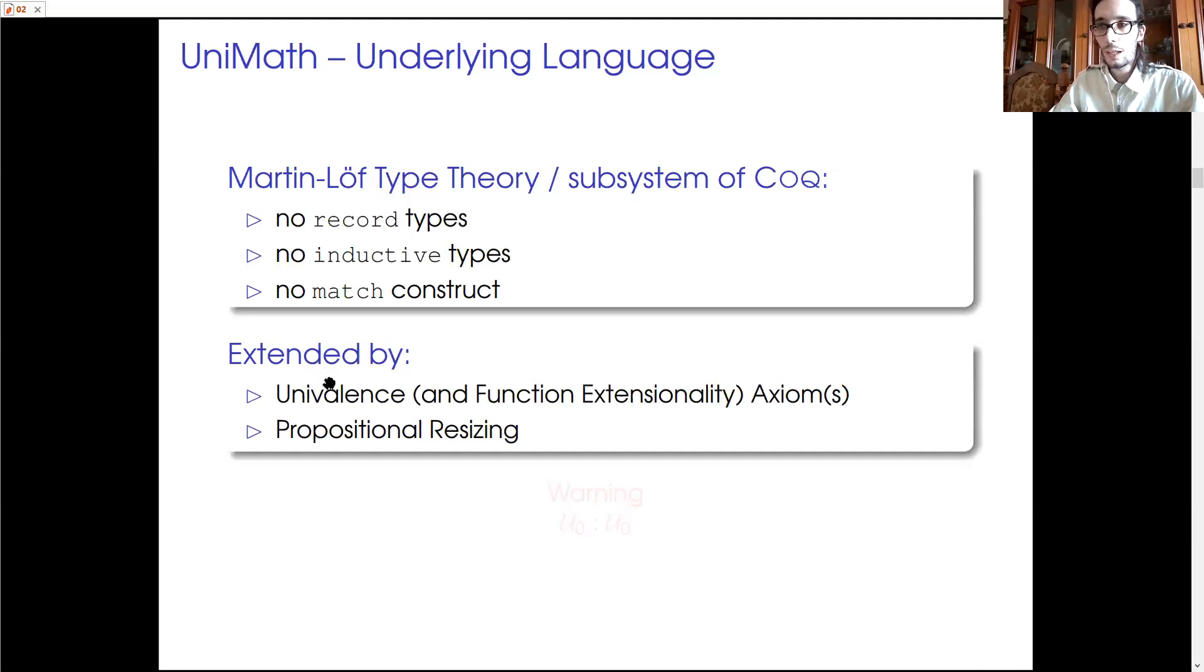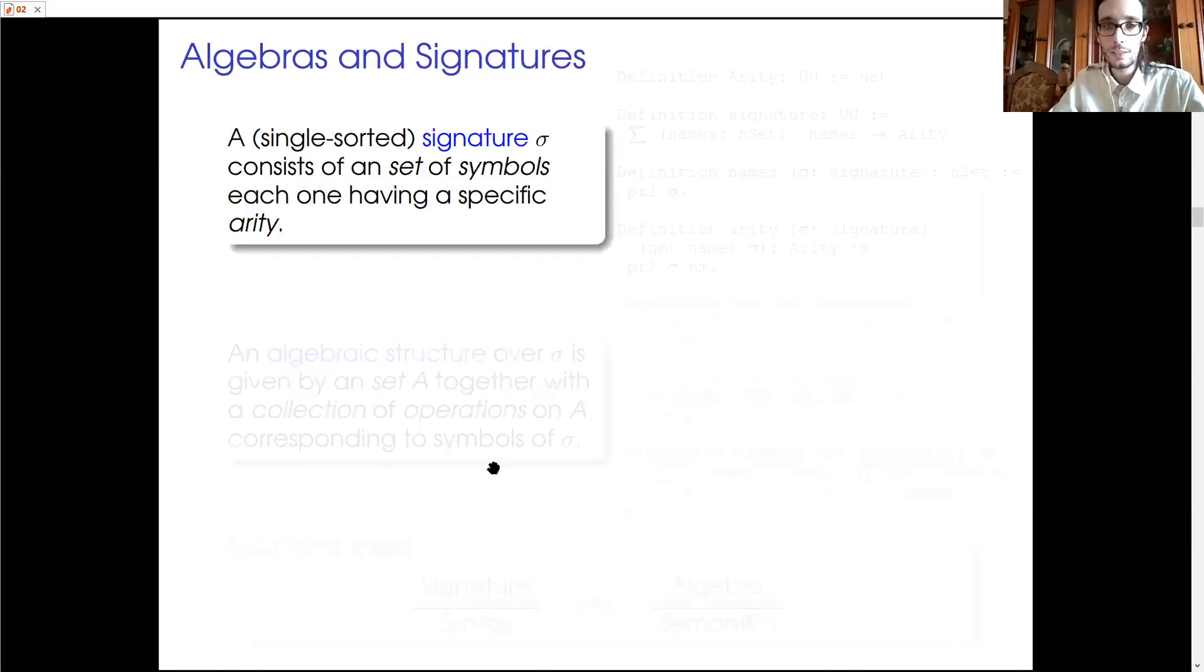But there are also some issues. For instance, we know that U lives in U in UniMath. And that means that UniMath, like any other currently available implementation of univalent reasoning, needs further refinement. But anyhow, we use UniMath since the very beginning of our formalization.